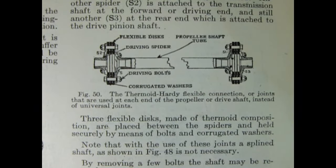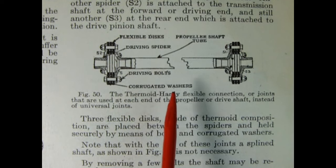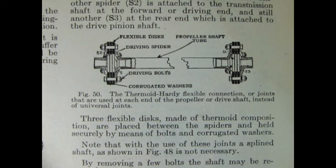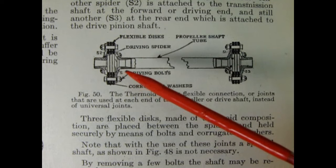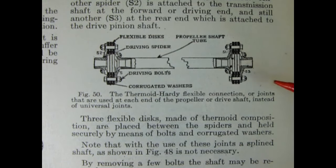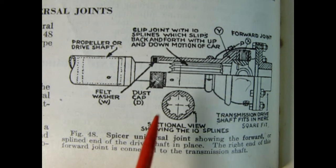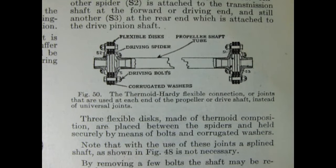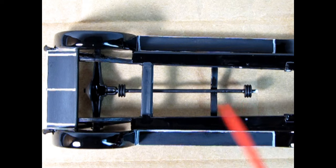My research has finally led me to an answer as to what those discs are at the end of the driveshaft. This is known as the thermoid hardy flexible connection or joints that are used at each end of the propeller or driveshaft instead of universal joints. Three flexible discs made of thermoid composition are placed between the spiders and held securely by means of bolts and corrugated washers. Note that with the use of these joints a spline shaft is not necessary. By removing a few bolts the shaft may be removed. So I will paint these according to what I discovered.